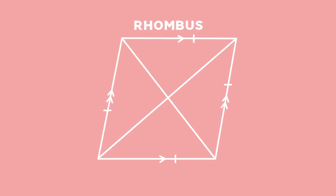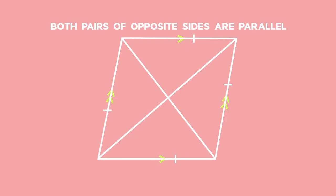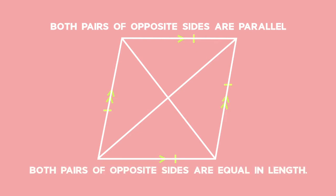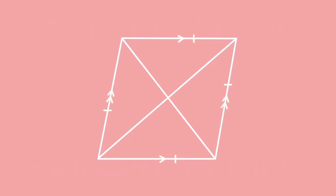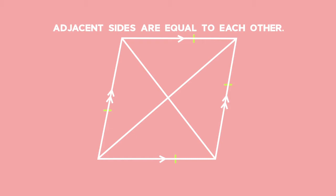In a rhombus, just like a parallelogram, both pairs of opposite sides are parallel and both pairs of opposite sides are equal in length. But in addition to that, the adjacent sides are equal to each other as well. So in a rhombus, the adjacent sides are equal to each other.